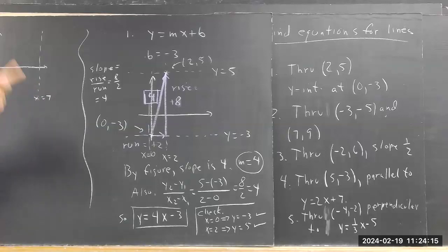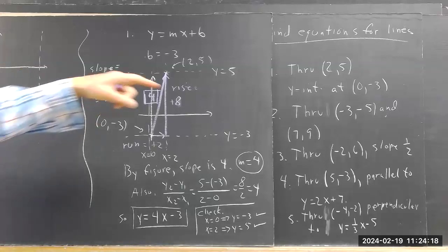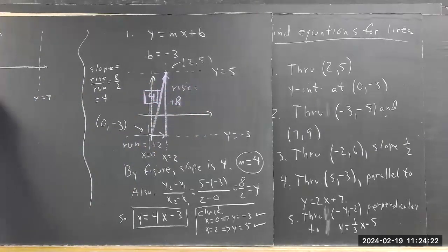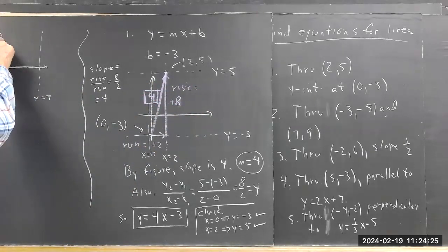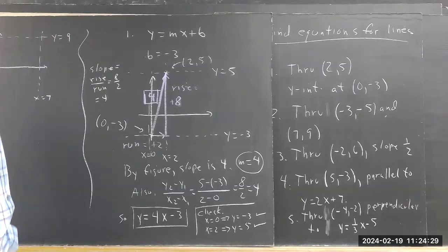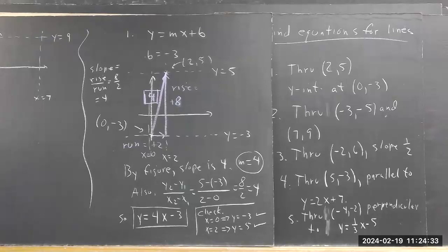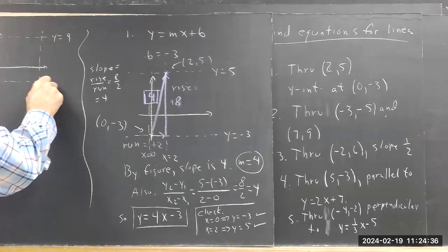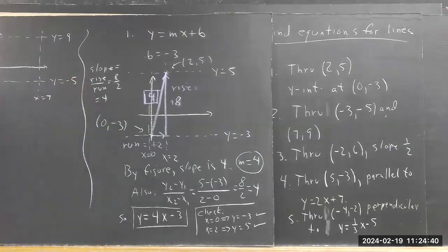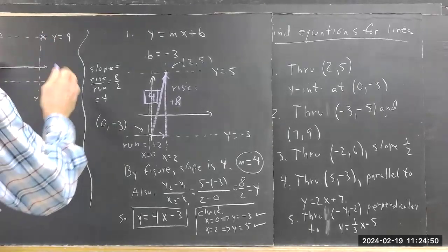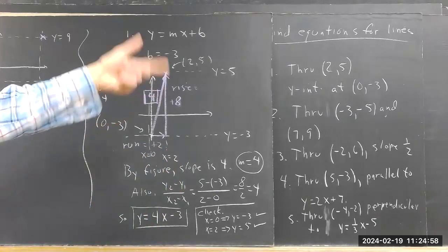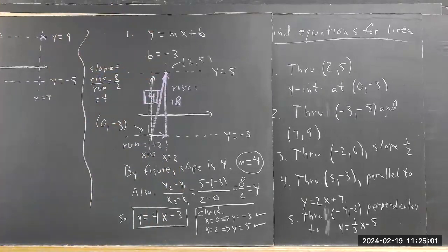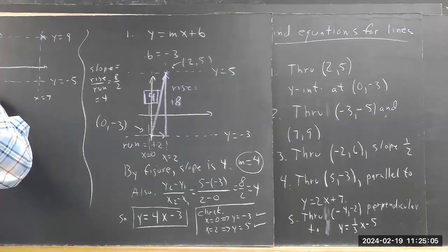Then we have y values negative 5 and 9. I'll start with the biggest y value, which is 9. If y equals 9 here, negative 5 is a little more than half of 9, so it probably ought to be about here. If you draw these lines, it gives you a better picture. Everything makes more sense if you think in terms of the picture. Again, there's a formula — y₂ minus y₁ over x₂ minus x₁ — but the picture sticks better than the formula for most people.